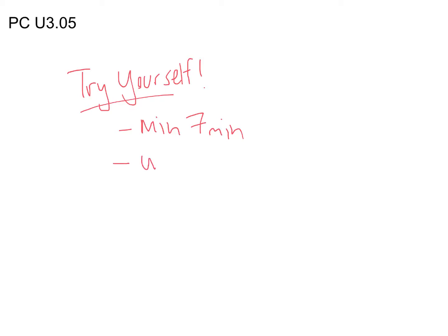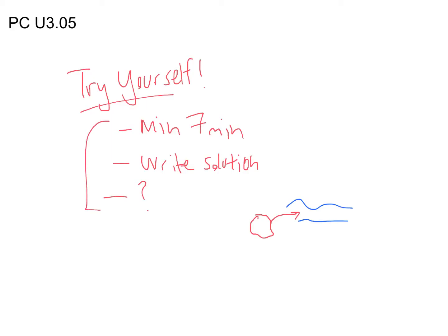For each question, write out your solution in English sentences — that means you're explaining what it means. You'll get no credit if you're just circling some random number. And if you have questions, write down any questions. Create a little thought bubble, point to it, write your question down. If you have no questions, that means you have a full and complete solution, and I will have you explain it to the class. So those are the three requirements.